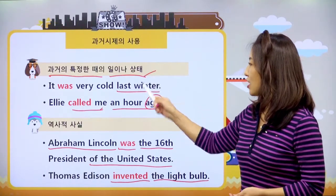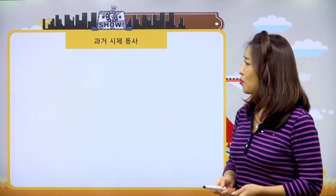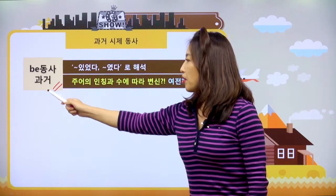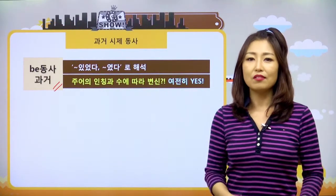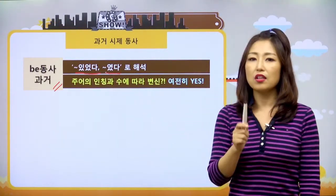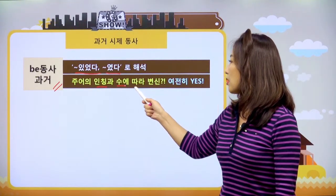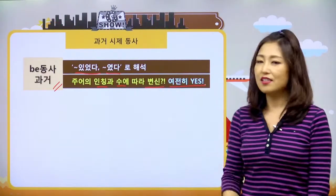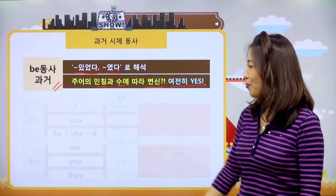이렇게 두 가지 상황에서 단순 과거 시제를 쓰고요. 과거 시제 동사를 살펴봐야 하는데, 일단 비동사 먼저 살펴볼게요. 비동사는 뭐뭐이다, 뭐뭐다 이런 의미로 현재에서 해석이 됐고, 그게 과거가 되니 있었다, 뭐뭐였다로 해석이 되는 거죠. 그리고 주어의 인칭과 수에 따라서 변신하냐? 과거여도 역시 여전히 변신하죠.